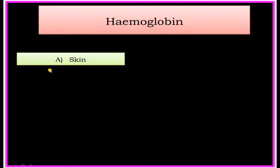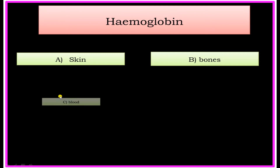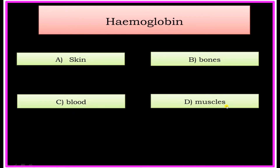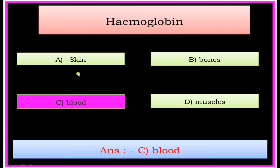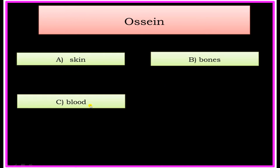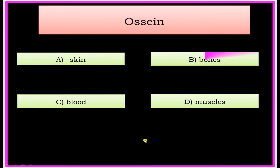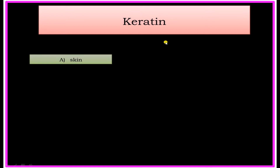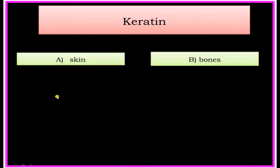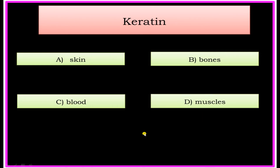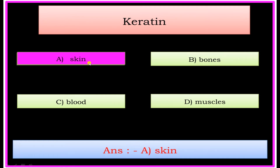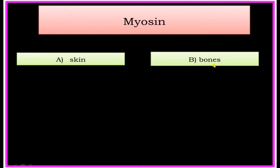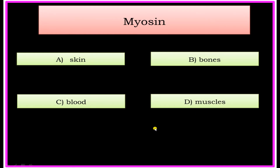Hemoglobin — Options: A) Skin, B) Bones, C) Blood, D) Muscles. Answer: Blood. Ossein — Options: A) Skin, B) Bones, C) Blood, D) Muscles. Answer: Bones. Keratin — Options: A) Skin, B) Bones, C) Blood, D) Muscles. Answer: Skin.